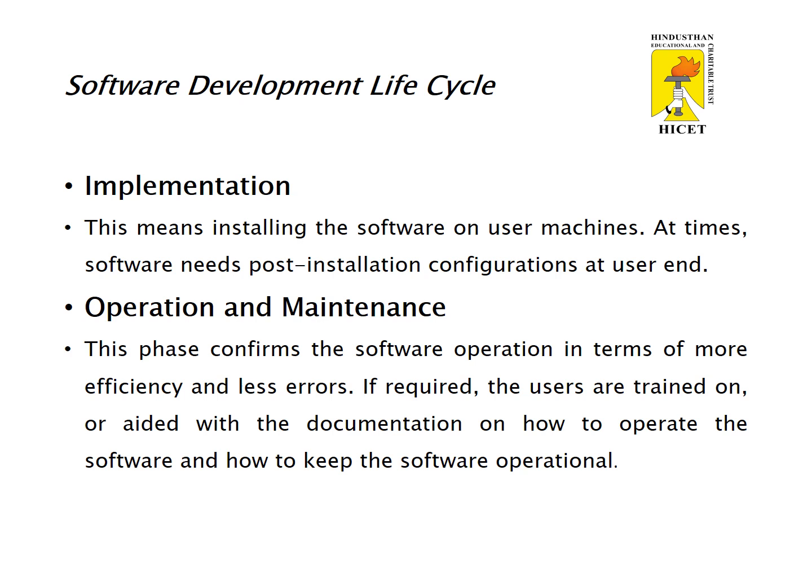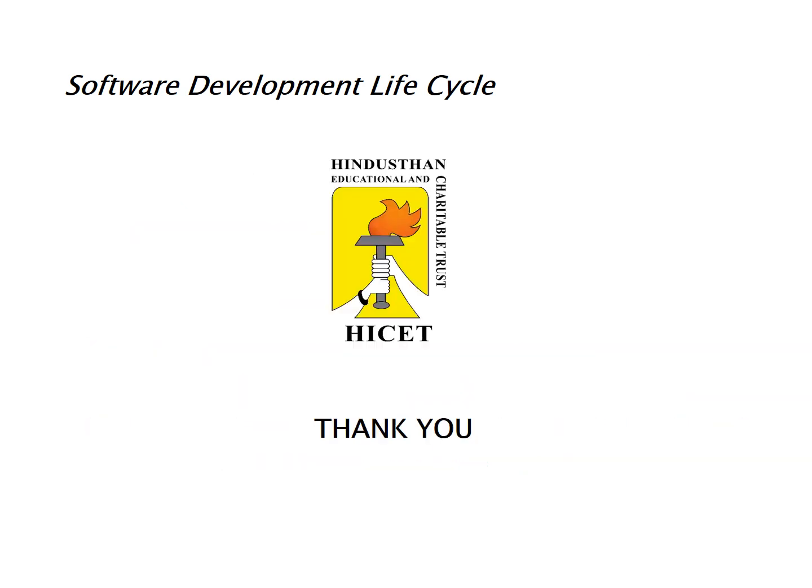The final phase is Operation and Maintenance. This phase confirms the software operation in terms of more efficiency and less errors. If required, users are trained with documentation on how to operate the software and how to keep it operational. The software is maintained timely by updating the code according to changes taking place in the users' environment or technology.